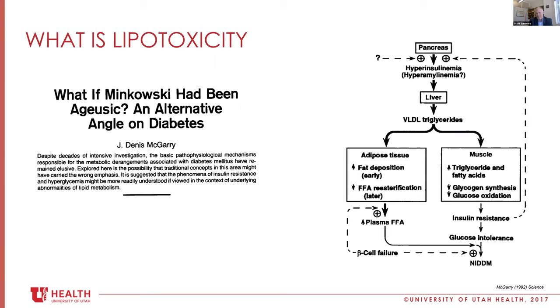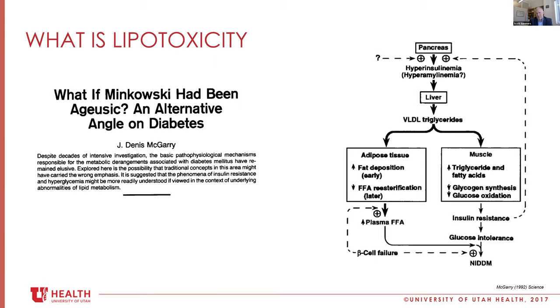Dennis proposed a completely alternative view of the pathology of diabetes, where the initial step was not insulin resistance but actually too much insulin — making extra fat that then went out in the bloodstream. That fat goes into adipose tissue or muscle, then the muscle develops insulin resistance contributing to hyperinsulinemia. He argued the first step might be too much insulin, not insulin that doesn't work. The reality is probably both of those things happen.